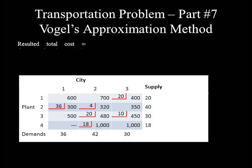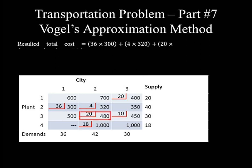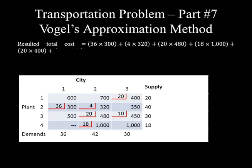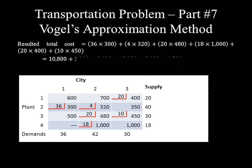The total cost is calculated from the occupied cells: (36 × 300) + (4 × 320) + (20 × 480) + (18 × 1,000) + (20 × 400) + (10 × 450). Computing each term: 36 × 300 = 10,800; 4 × 320 = 1,280; 20 × 480 = 9,600; 18 × 1,000 = 18,000; 20 × 400 = 8,000; 10 × 450 = 4,500. The sum of these values gives a total transportation cost of 52,180.